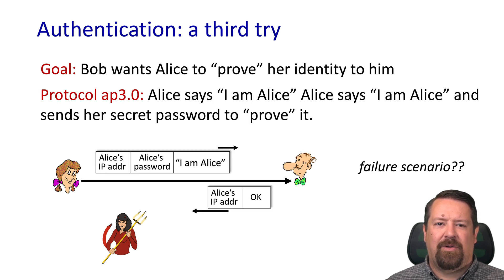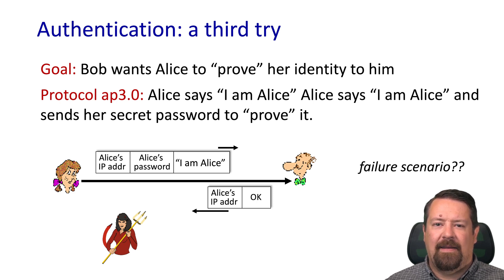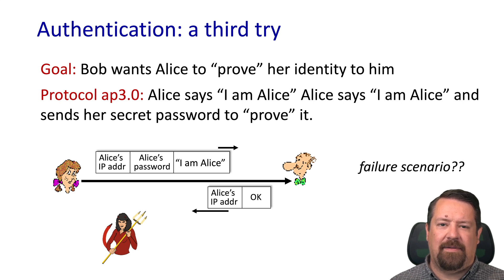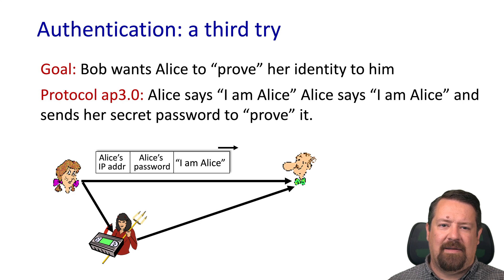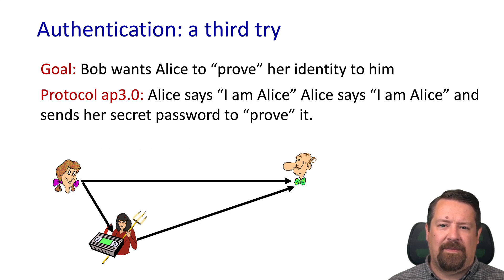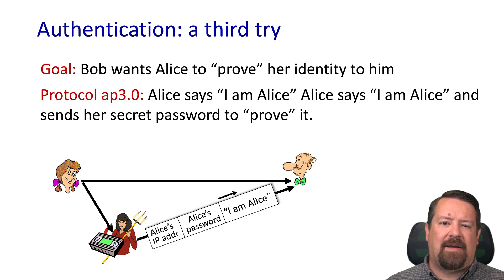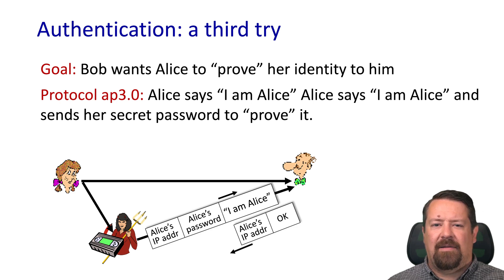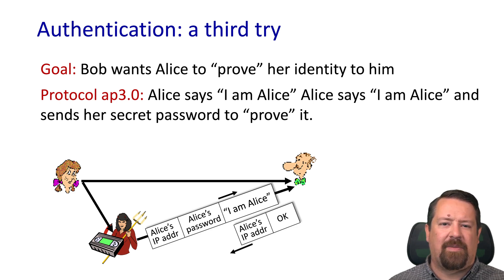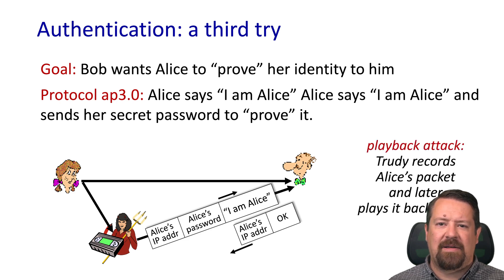In authentication protocol 3.0, Alice says 'I am Alice' and sends her secret password to prove it, then Bob acknowledges back. What could go wrong? Assuming our attacker is able to record that initial communication, they can do a replay attack — just save the message with 'I am Alice' and the secret password, and send a copy of that packet anytime they want. From Bob's perspective, the spoofed packet with Alice's source IP and password is just as legitimate as the real one. That is the replay attack.